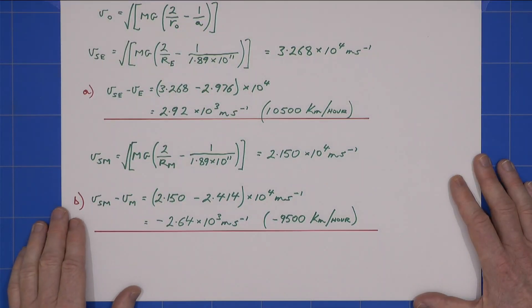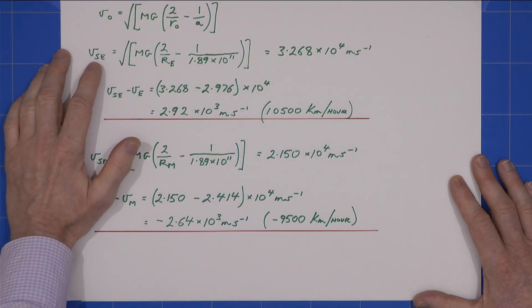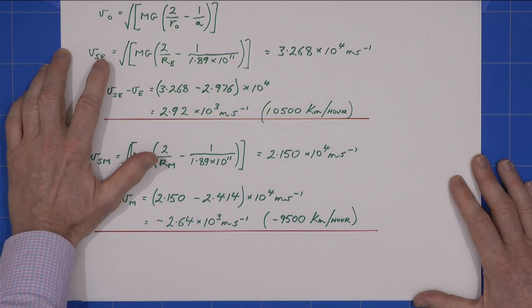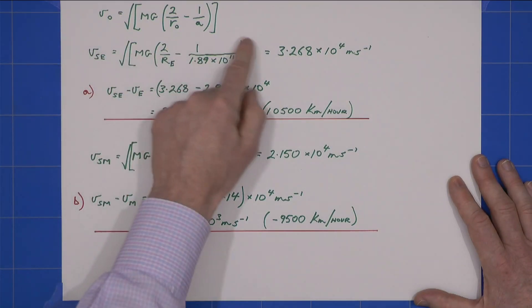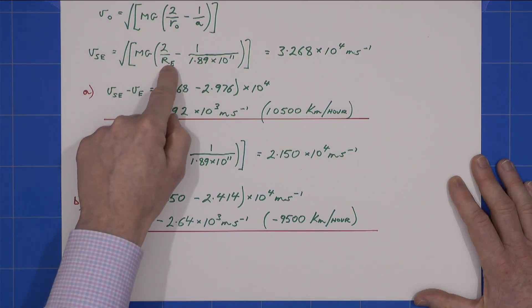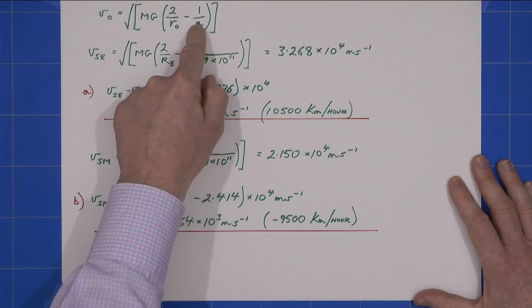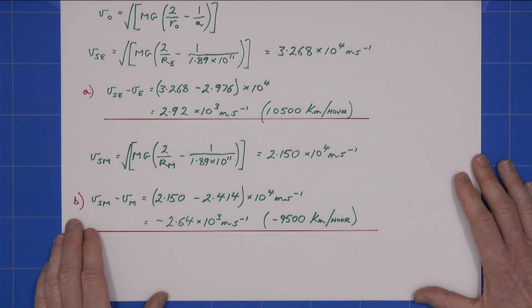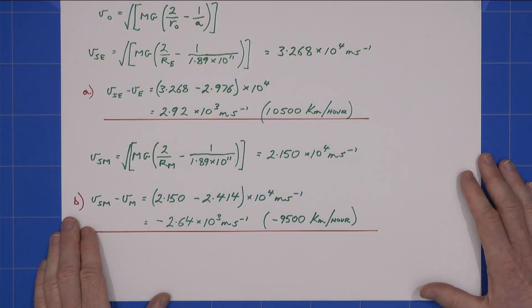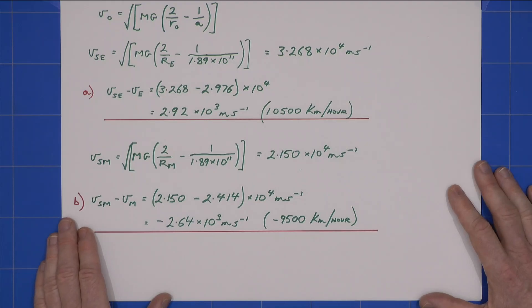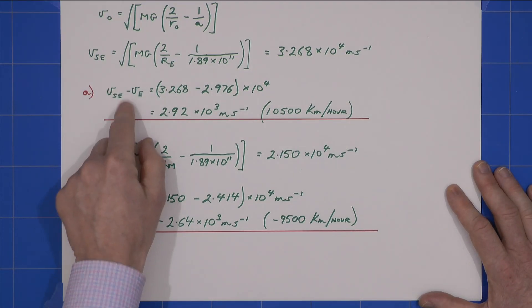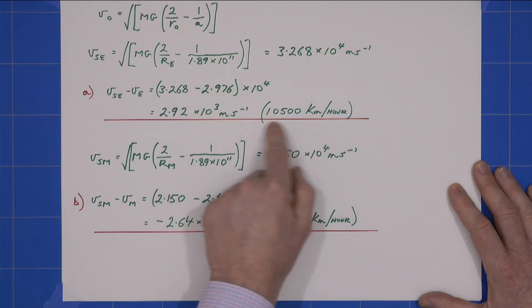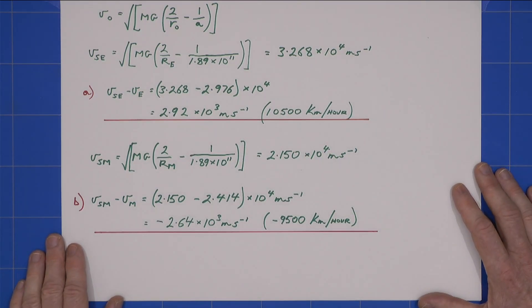Now we want the speed of the spacecraft. Using the velocity expression we found, the velocity of the spacecraft at Earth's position is this value here, where r₀ is r_Earth and 'a' is the semi-major axis of our elliptical path. The relative speed — spacecraft minus Earth — turns out to be about 10,500 kilometers per hour.